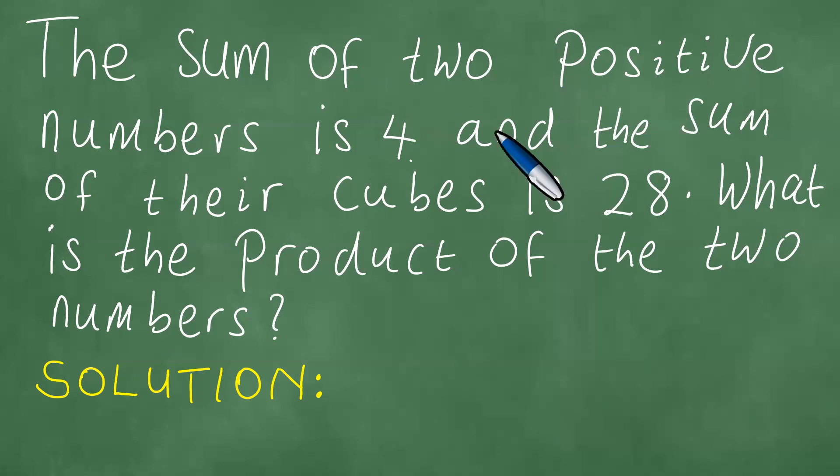The sum of two positive numbers is 4, and the sum of their cubes is 28. What is the product of the two numbers? Okay, so we want to solve this problem in detail.